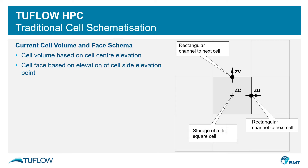Before introducing subgrid sampling, let's first consider how TwoFlow schematizes the cell geometry. TwoFlow samples a point at the center of the cell, the ZC point, which determines the cell volume and storage. TwoFlow also samples points at the cell sides, the ZU and ZV points.